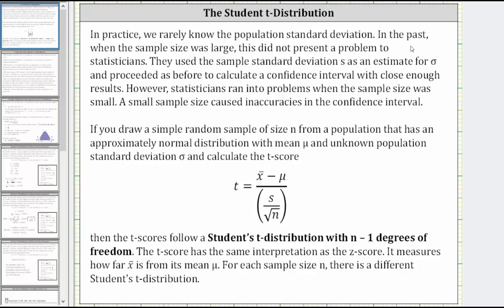In the past, when the sample size was large, this did not present a problem to statisticians. They used the sample standard deviation s as an estimate for σ and proceeded as before to calculate a confidence interval with close enough results. However, statisticians ran into problems when the sample size was small. A small sample size caused inaccuracies in the confidence interval.